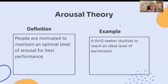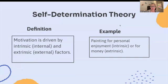Arousal theory: people are motivated to maintain an optimal level of arousal for best performance. An example: a thrill seeker skydives to reach an ideal level of excitement. Self-determination theory: motivation is driven by intrinsic (internal) and extrinsic (external) factors. For example, painting for personal enjoyment — intrinsic — or for money — extrinsic.